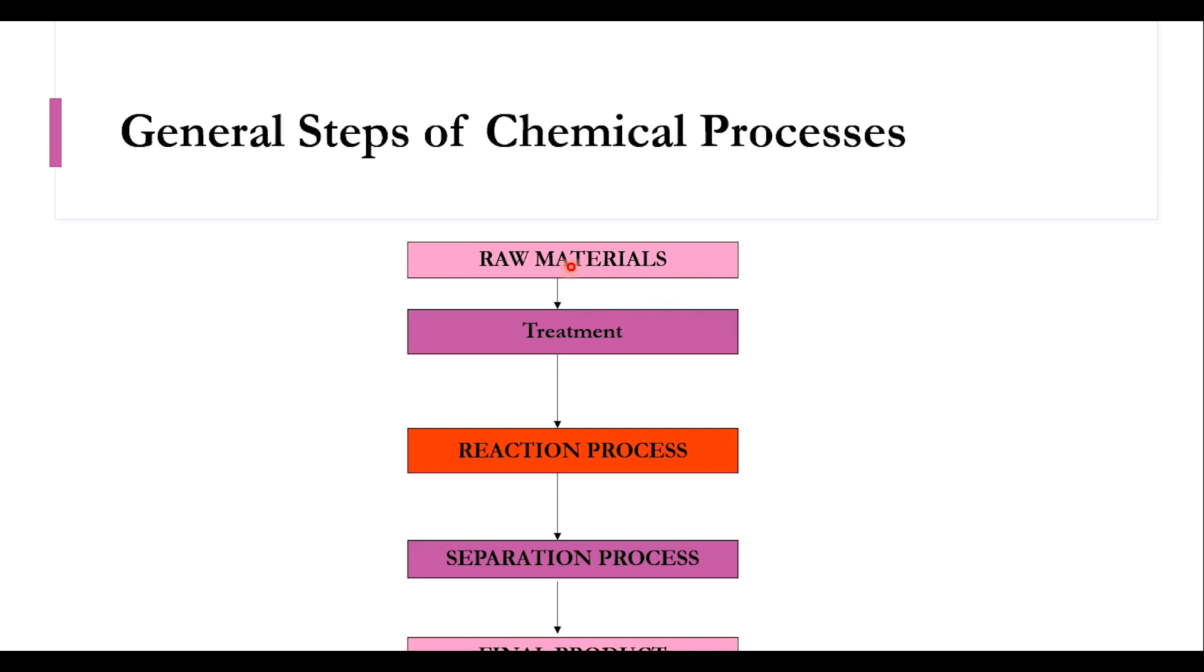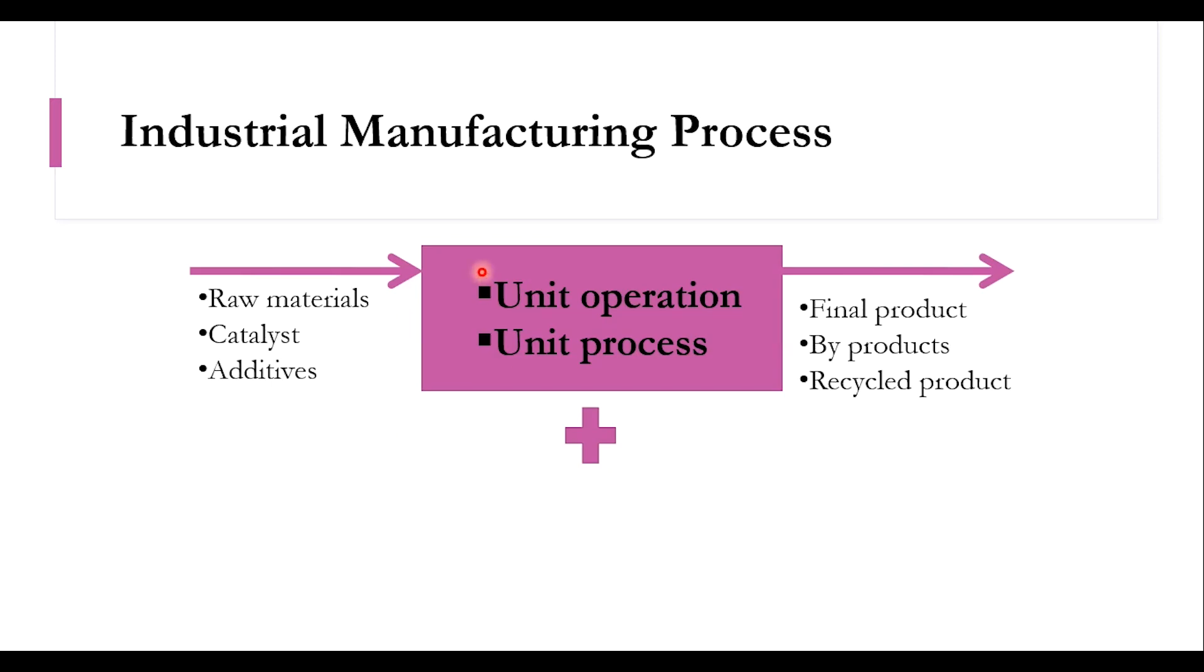The general manufacturing plants or general steps start with the raw material, the treatment process, the reaction process, the separation and the final product. If we divide the overall system, the reactor or reaction process is the core of a chemical plant. These are the pre-treatment steps and these are the post-treatment steps. Pre-treatment steps include the raw material, the treatment like filtration and different techniques, then the reaction system, then the post-treatment which includes cyclone, separator and different techniques, distillation and so on, and then we get the final product.